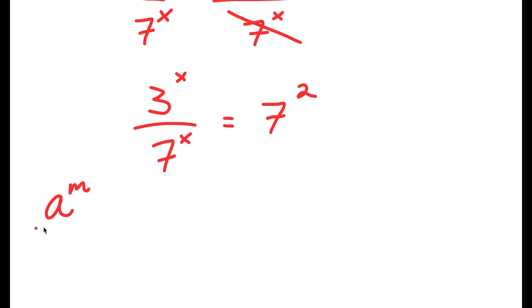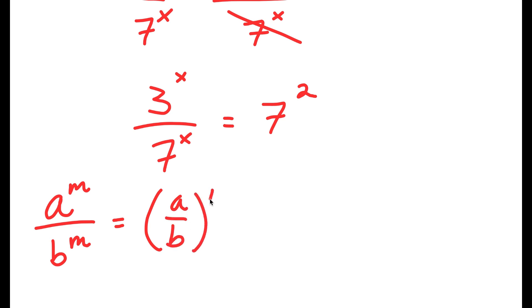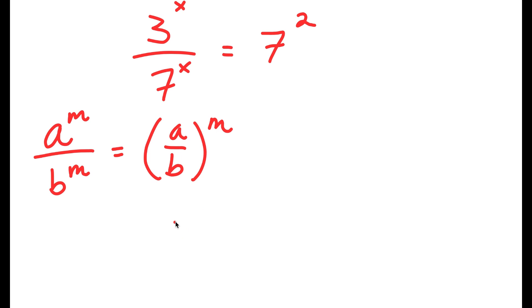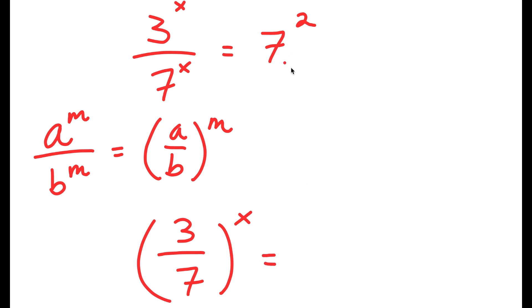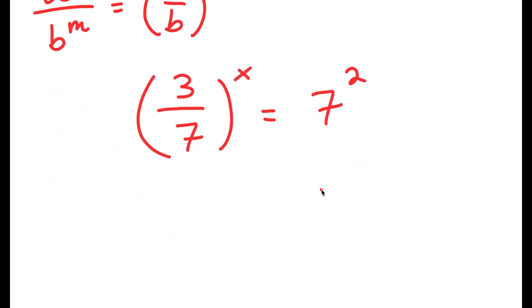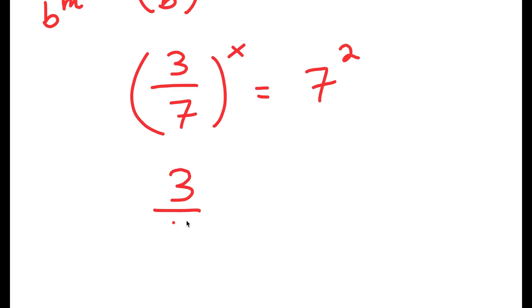Now, if I have something in the form a to the power of m over b to the power of m, this is equal to a over b to the power of m. So 3 to the power of x over 7 to the power of x is going to equal 3 over 7 to the power of x, and this is again equal to 7 to the power of 2. Now, 7 squared is equal to 49, so I have 3 over 7 to the power of x is equal to 49.